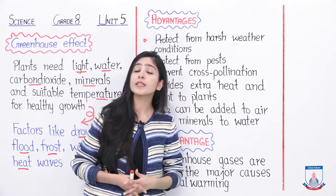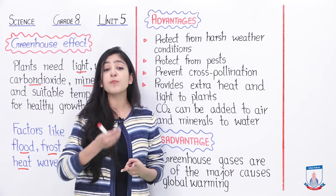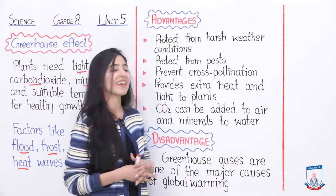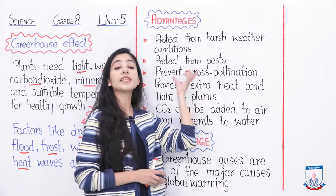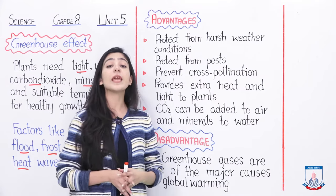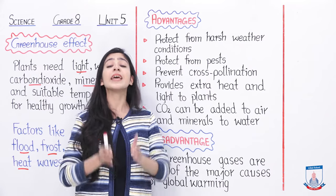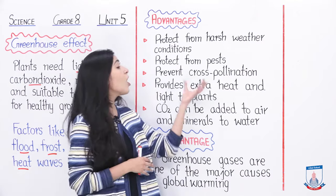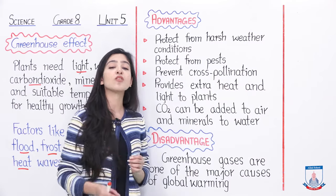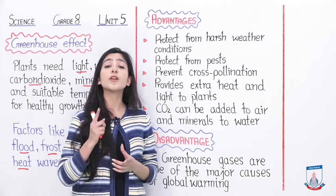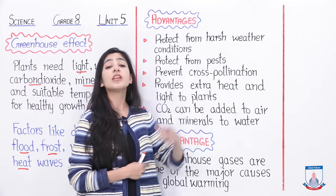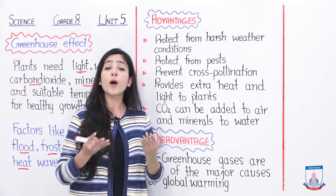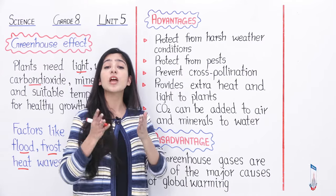Second, it protects from pests. In open areas, any insect, wild bird, or animal can come and damage our crops. But in an enclosed area, we can save our crops from all these things. Third, it prevents cross-pollination. Cross-pollination is caused by insects. In a closed area, insects don't come from outside, so pollen grains are not transferred between different plants, which is beneficial for maintaining crop quality.